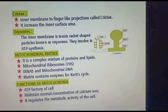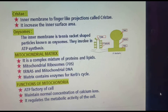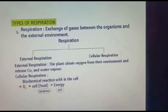Functions of mitochondria: first, it is the ATP factory of the cell — 80% of ATP is produced here. It also maintains the normal concentration of calcium ions in the cell, and it regulates the metabolic activity of the cell.